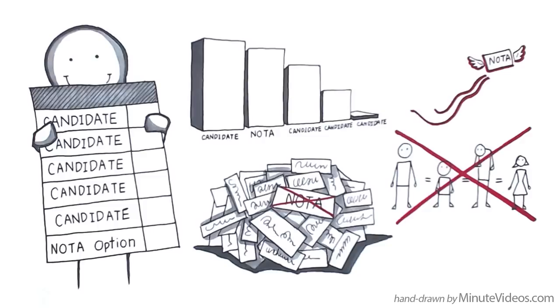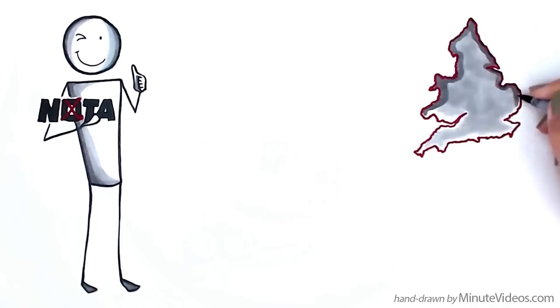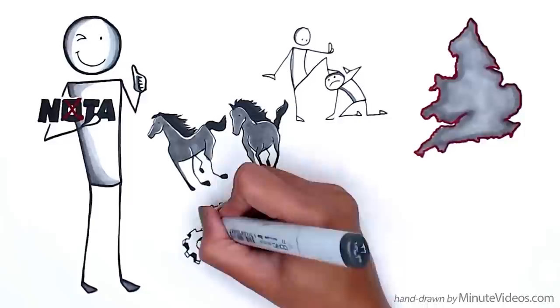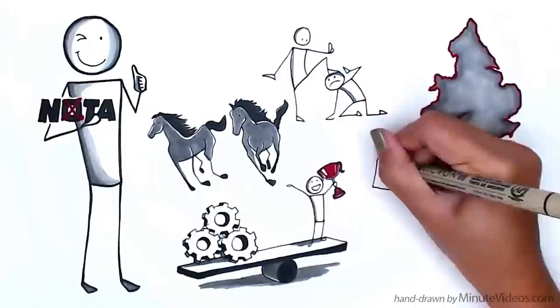Clearly then, including nota would be a positive step, not a negative one, especially when you consider that the current UK voting system ensures a two-horse race, in which smaller parties exist simply to shoehorn one or the other of them into power if necessary. At Nota UK, we have a solid proposal for handling a nota win that is fair and easily implementable, enabling positive voter-directed change that is impossible to stonewall. More on that in a later video.